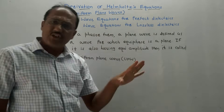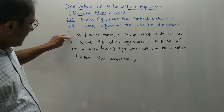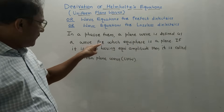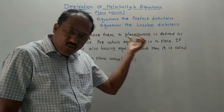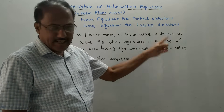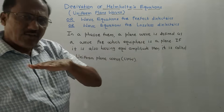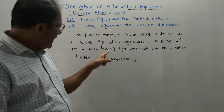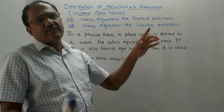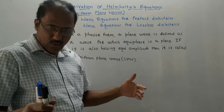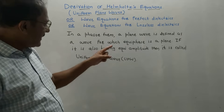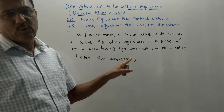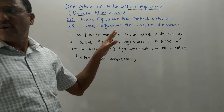First we will discuss the definition of uniform plane wave. In phasor form, a plane wave is defined as a wave for which the equiphase surface is a plane — equi means equal, same. That means if the wave has equal phase and it is a plane, it is called a plane wave. If such a plane wave also has equal amplitude, then it is called a uniform plane wave, abbreviated as UPW.